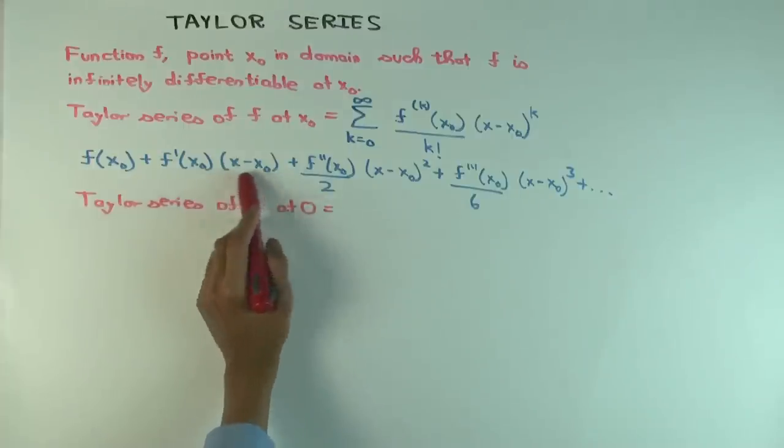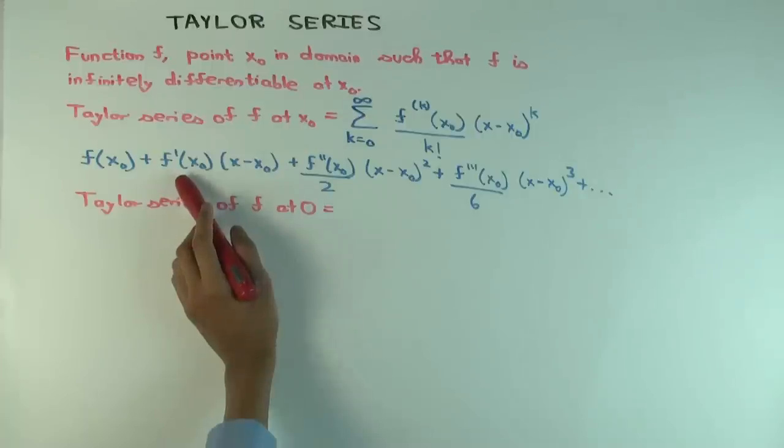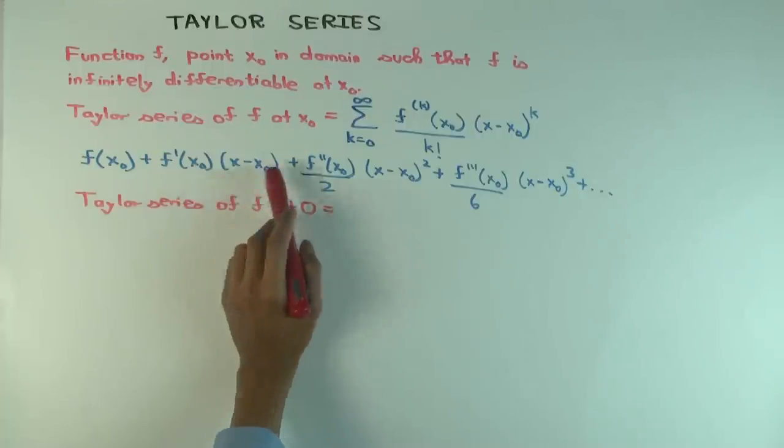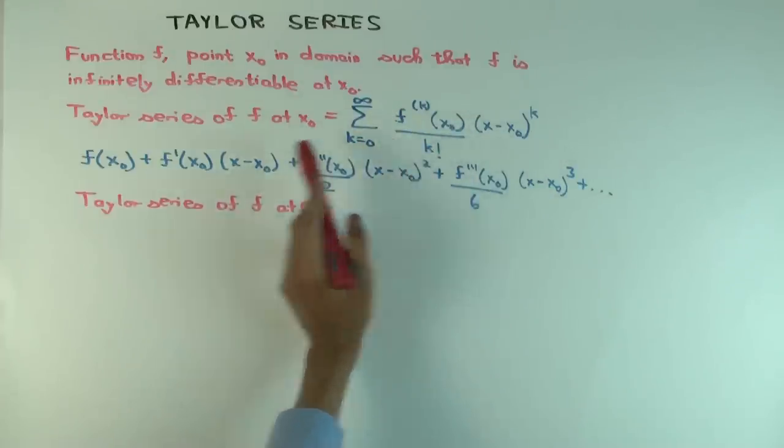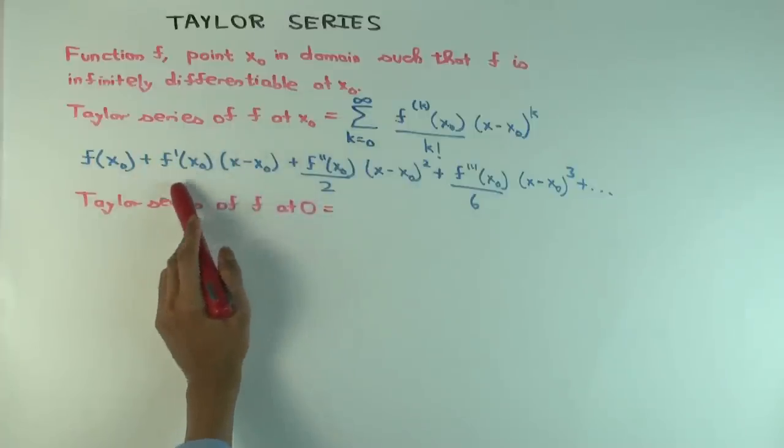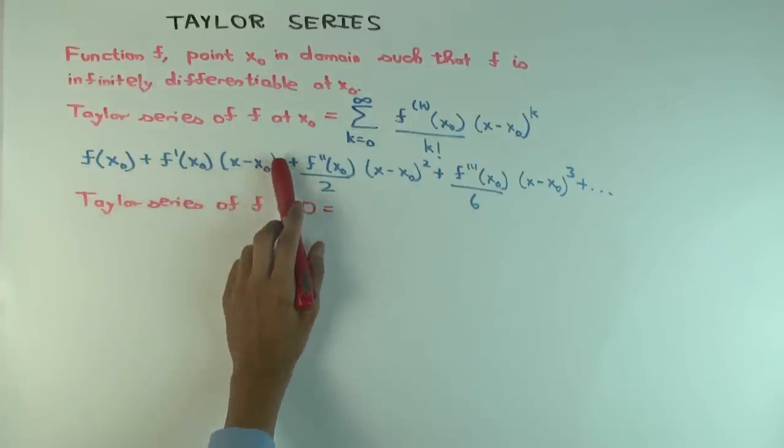Now, what about this stuff? This comes from what value of k? 1. k equals 1. So how do you get this? Well, when k equals 1, this becomes f prime x0. The denominator is 1 factorial. That's 1. So you get f prime x0 over 1. I didn't write the over 1, but it's there invisible. Times x minus x0 to the power of 1. It's x minus x0.